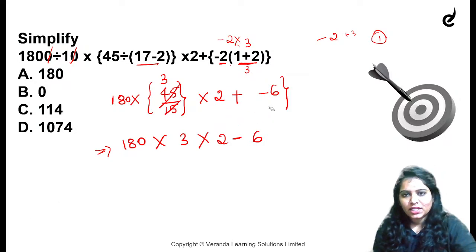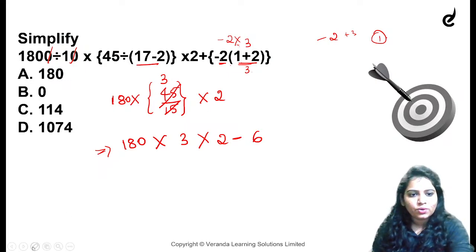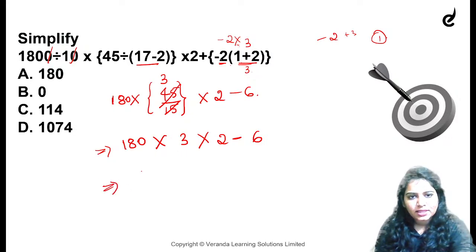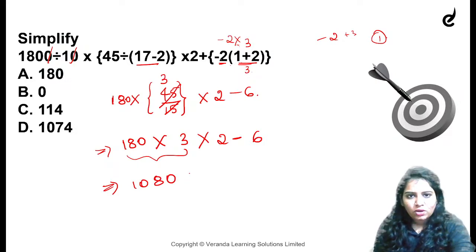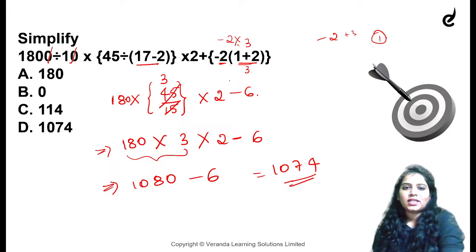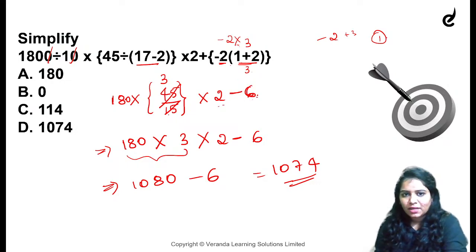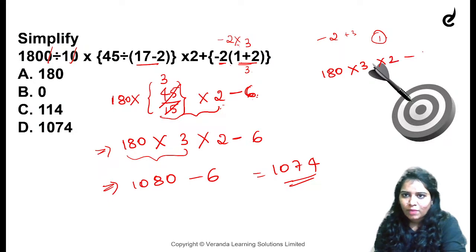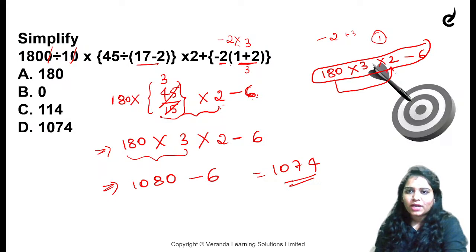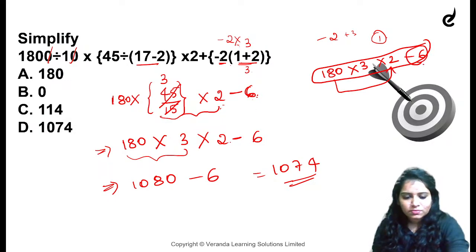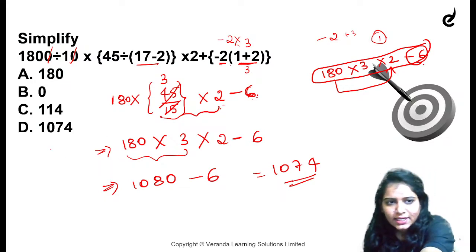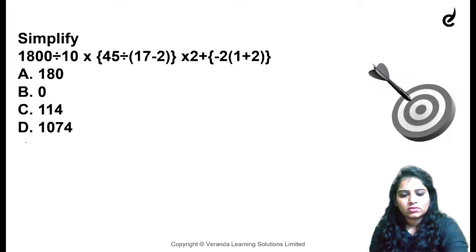2 minus 6, 2 minus 6 — 1, 1, and then 3. OK, this is 0, 8, 0, so 1, 0, 8, 0, minus 6 — 1, 1, 0, 7, 4. So here we are minus 6, directly into 180 into 3 into 2 minus 6 first into minus, subtract — 1074 is the correct answer. Option D.